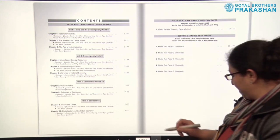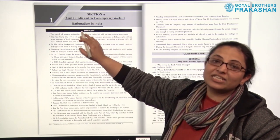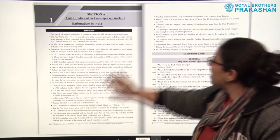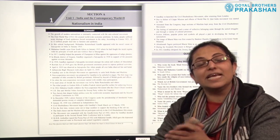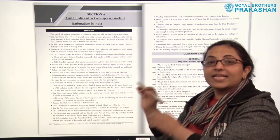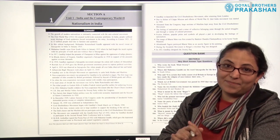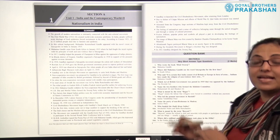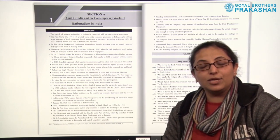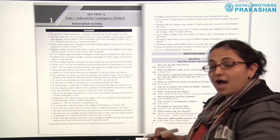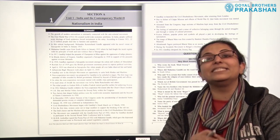Now let me take you through the units individually. This is section A of the book. The first unit is India and the Contemporary Worlds 2. Chapter 1 is Nationalism in India. Here, the summary is given in the starting. Every unit has been designed in a similar manner where the complete summary of the chapter is provided at the beginning, so the child can revise and recapitulate the complete chapter in a very short while. The summary is given point-wise. Questions from the previous year's question papers are included in the question bank, and the question patterns are similar to those in the CBSE sample question paper.